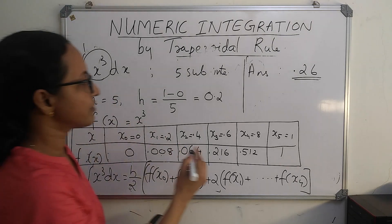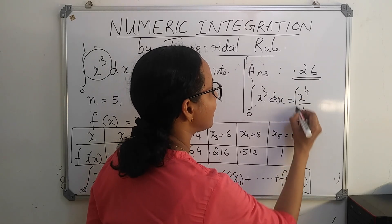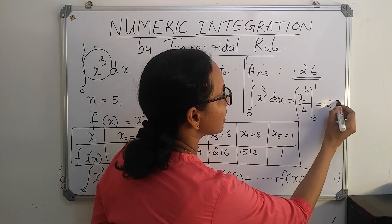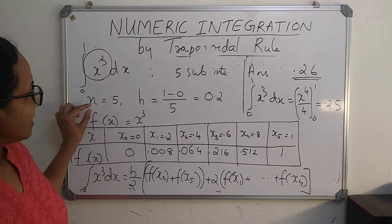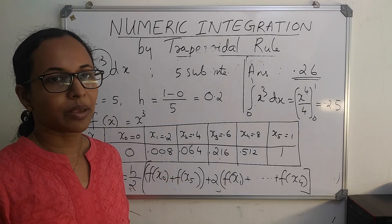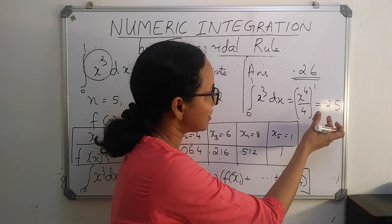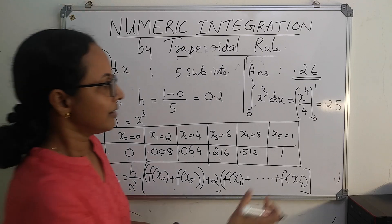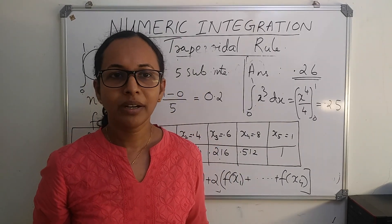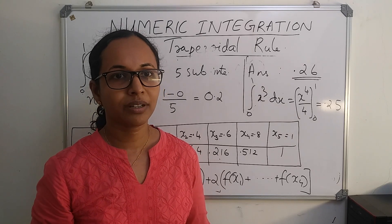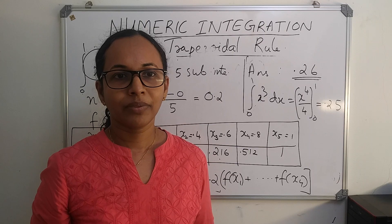By actual integration, the integral from 0 to 1 of x³ dx = [x⁴/4] from 0 to 1 = 0.25. So there is an error in the trapezoidal value of 0.26. To minimize this error, you need to increase the number of subintervals — taking n as 10 or 15 reduces the error significantly. Since computers are available, you can write a program and choose n as 50, 60, or 100 to obtain a value very close to the exact answer.